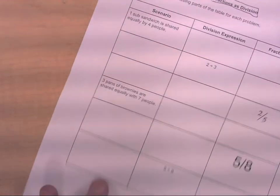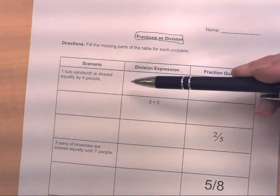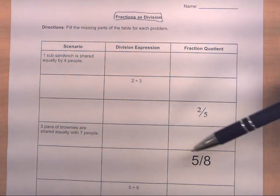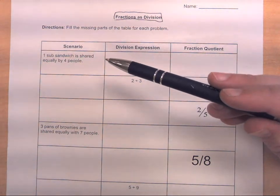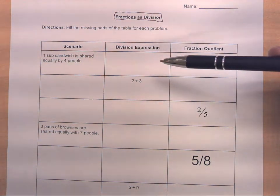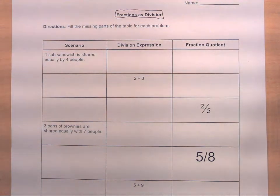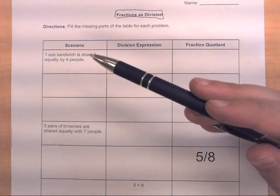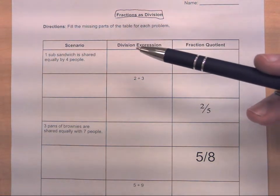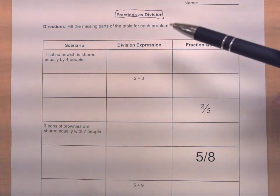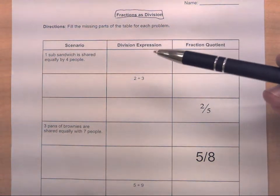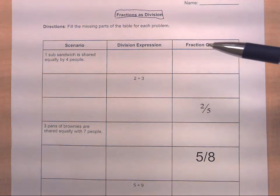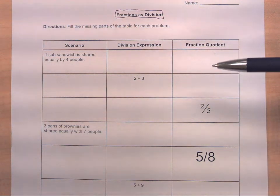To help make these connections, students used a table where they filled in missing parts. They were either given a scenario, a division expression, or a fraction quotient, and then asked to fill in the missing information. For example, in the first row, students are given a scenario: one sub-sandwich is shared equally by four people. They need to determine the matching division expression and the fraction quotient — how much sandwich each person gets.